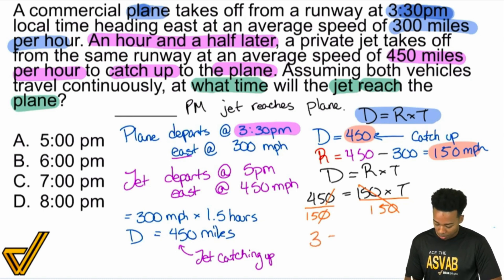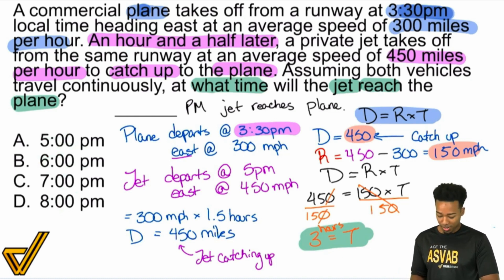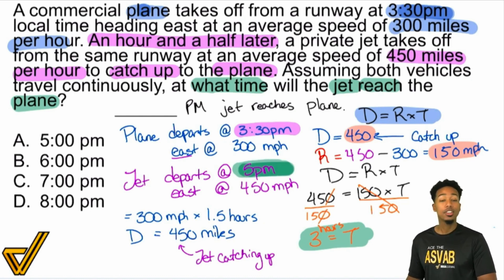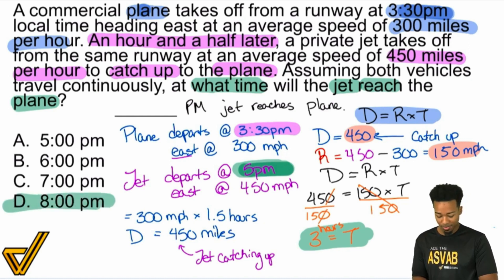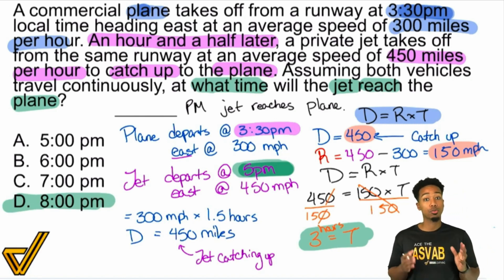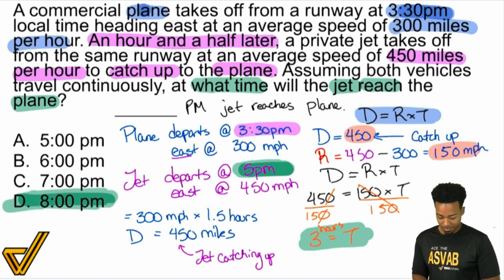The time is 3 hours. But there's no 3 o'clock in the answer choices — what's going on? Well, think about it: the jet departs at 5 PM, and then takes 3 hours to catch up after it departs — that's going to be 8 PM. And that's not when the plane departs that you add the time to — it's when the jet departs. Because once the jet starts, it starts catching up. So we get 8 PM.